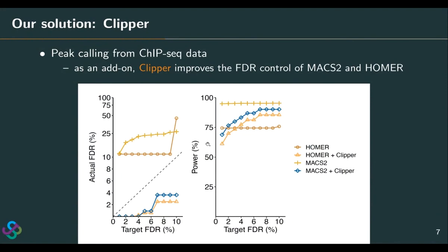We showed in our work that with Clipper as an add-on to the two famous softwares, Macs2 and Homer, we can actually help these two methods reduce the false discovery rate below the target. You can see that these two curves on the left were their false discovery rates before applying Clipper as an add-on. With Clipper as an add-on, the false discovery rates drop below the target. Clipper also maintains very good power — it even improves the power of Homer when the target FDR is greater than 5%.